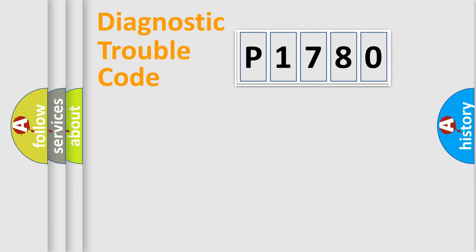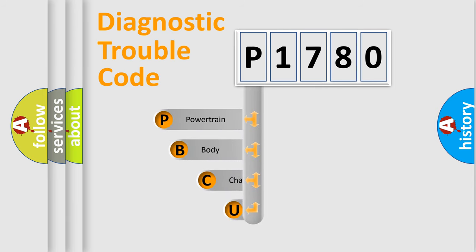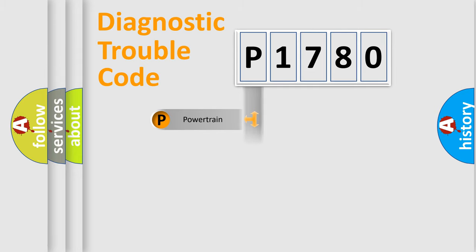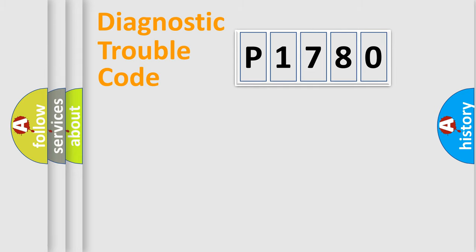Let's do this. First, let's look at the history of diagnostic fault code composition according to the OBD2 protocol, which is unified for all automakers since 2000. We divide the electric system of the automobile into four basic units: Powertrain, Body, Chassis, and Network.